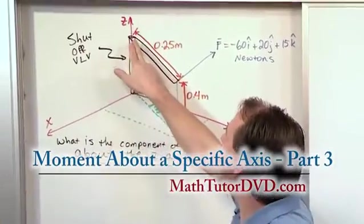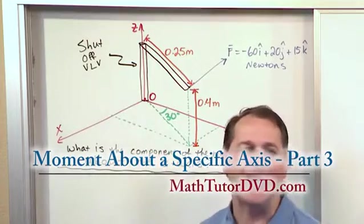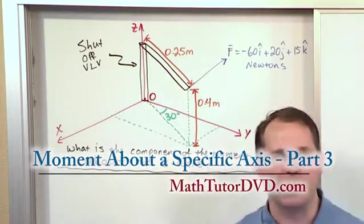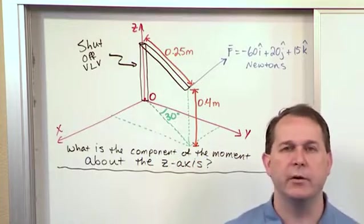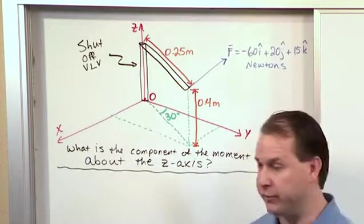What we have is the black structure here is a very crudely drawn shutoff valve. So think of it like the water department or something. There's a big valve and you have to give it some force with your hand to shut the water off to a neighborhood or something like that.